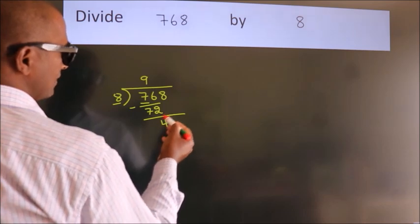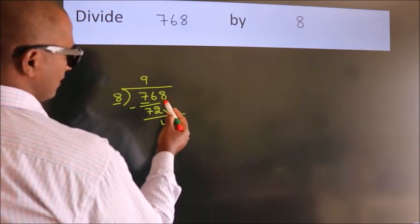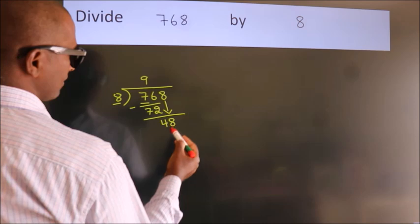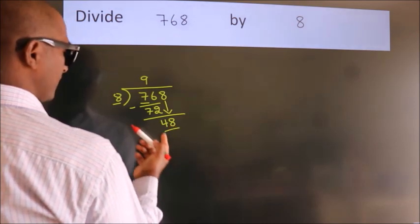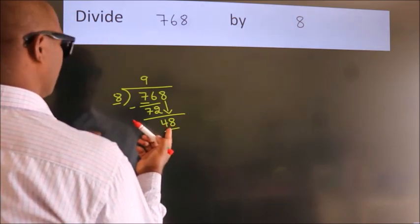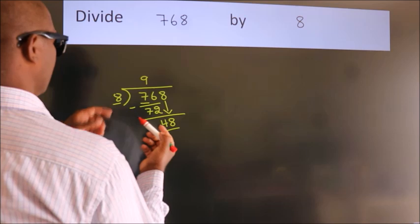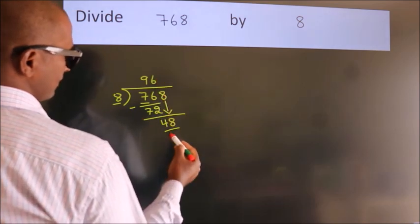After this, bring down the beside number. So 8 down. So 48. When do we get 48? In 8 table. 8, 6, 48.